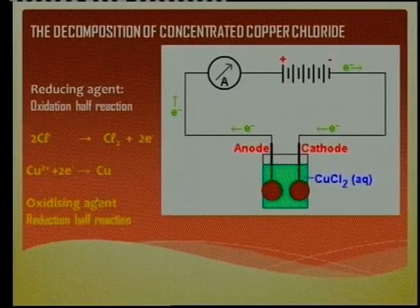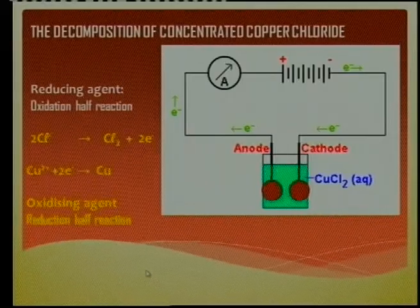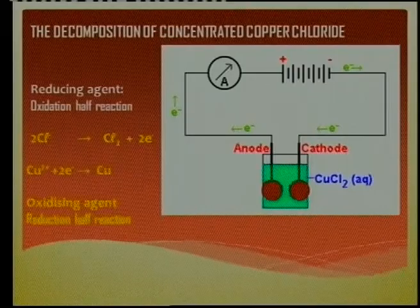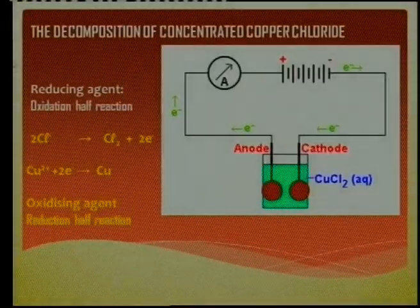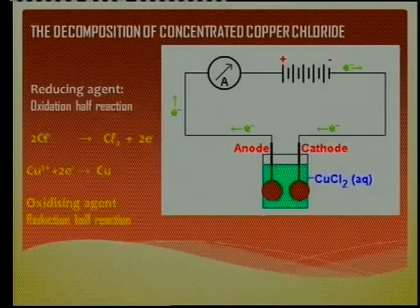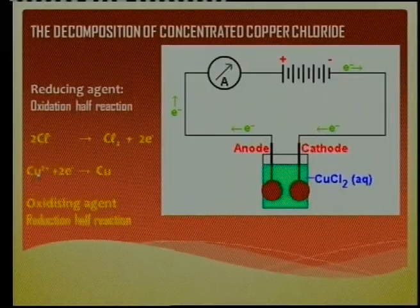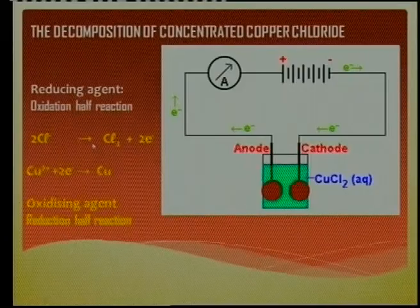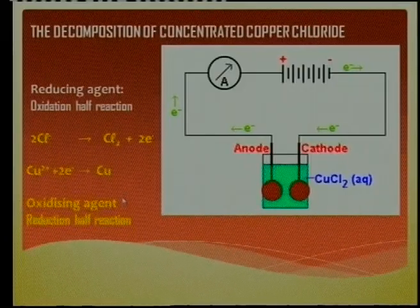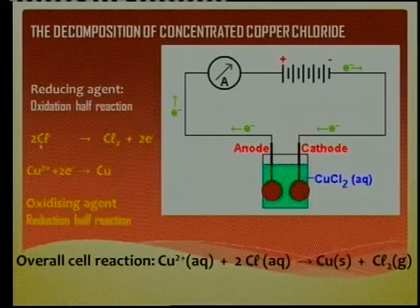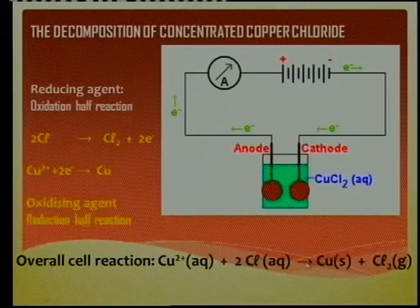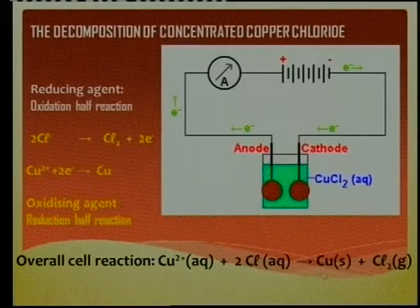This cathode reaction is called the reduction reaction. Can you complete the overall net reaction? You take the reactants from both half-reactions — the reducing agent side and the oxidizing agent side — add them together, write the arrow, and write down the products: chlorine gas and copper metal. So: copper ions plus chloride ions → copper plus chlorine gas (Cl₂).